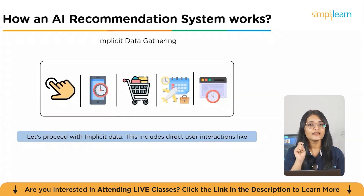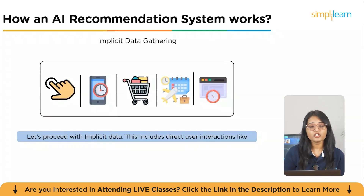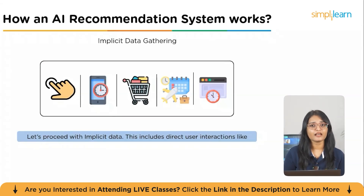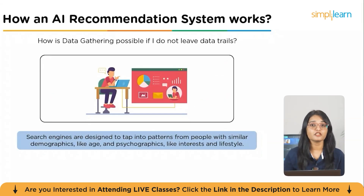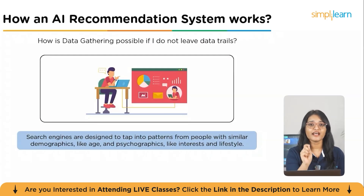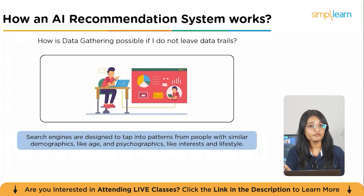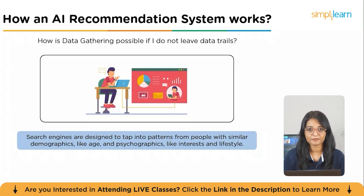The second type is implicit data gathering. This is data based on your behaviors like clicks, screen time, search history, and recent purchases. You might think: I never leave reviews, I always browse in incognito mode — there's no way they have data on me. But search engines don't just rely on your activity alone. They tap into patterns from people just like you, with similar demographics like age, and psychographics like interests and lifestyle choices, to make predictions on your preferences.